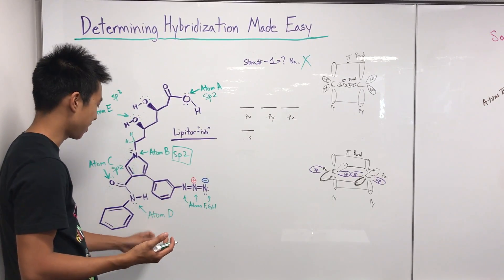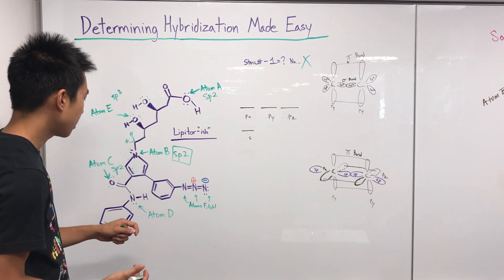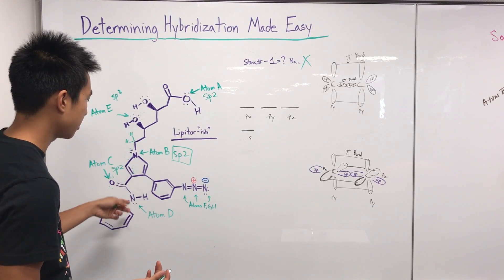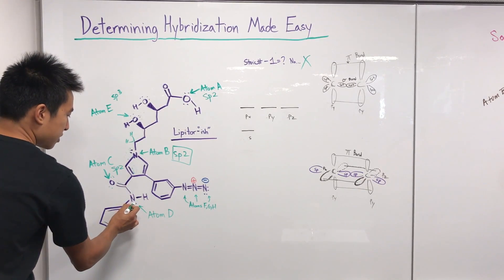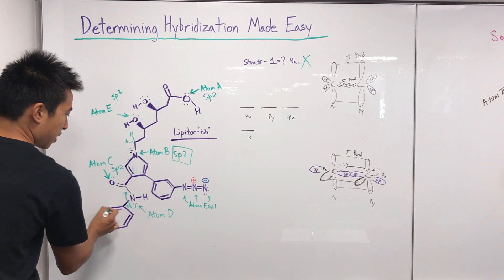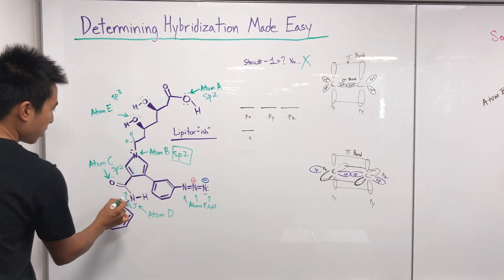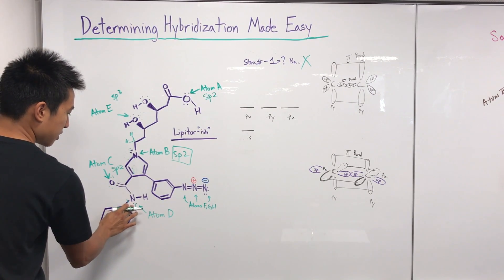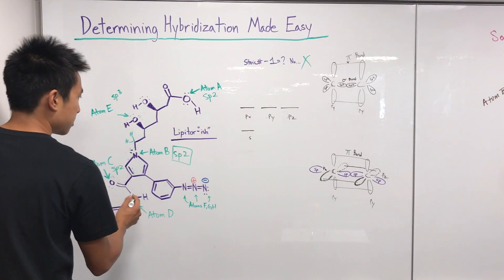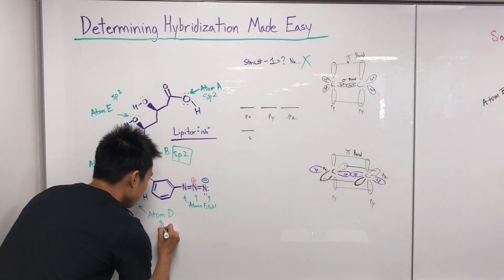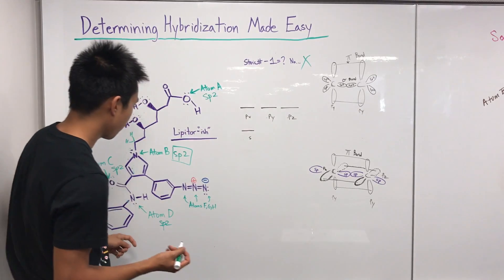Next, atom D — a nitrogen. It looks like sp3 at first because it has four groups and all single bonds. But this lone pair can resonate over to the left, moving that bond onto the adjacent carbon to form a double bond — or it can resonate the other way toward the oxygen. It can go one way or the other but not both, so the maximum number of pi bonds is still one. One p orbital is sacrificed, leaving one s and two p's — atom D is sp2.